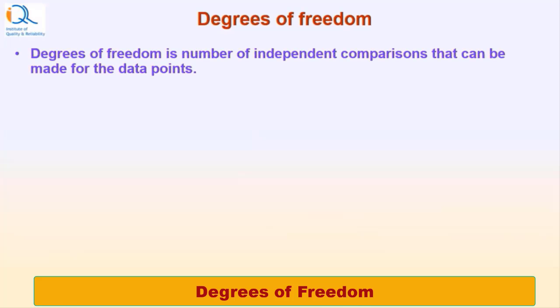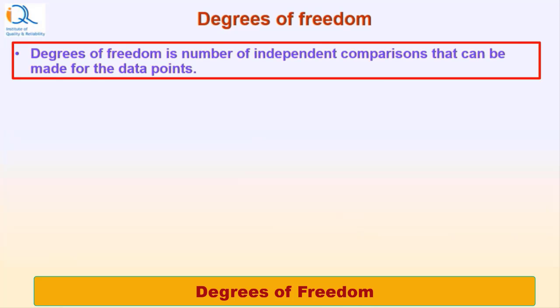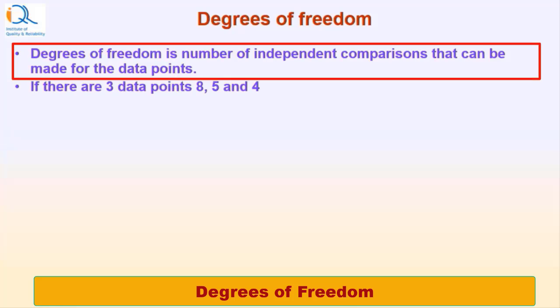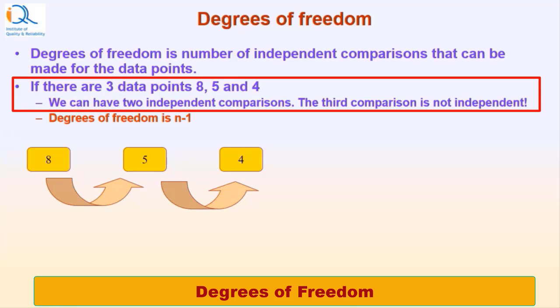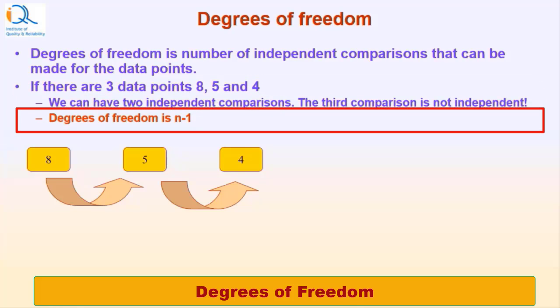Degrees of freedom is number of independent comparisons that can be made from the data points. If there are three data points, for example 8, 5 and 4, then we can have two independent comparisons. The third comparison is not independent. Therefore, we can say that the degrees of freedom is n minus 1.